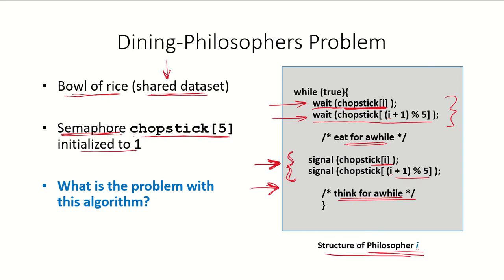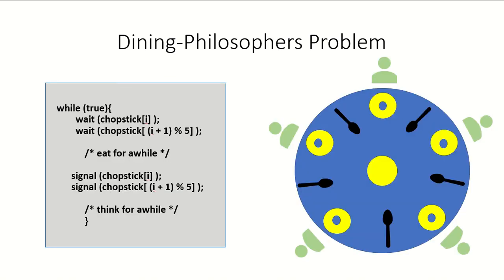What is the problem with this algorithm? Each philosopher is waiting on semaphore i and waiting on semaphore i plus 1 modulus 5. Philosopher i is waiting on chopstick i — say i equals 0 — and needs both chopsticks to eat, picking them one at a time. First he will pick either c0 or c1 and then take the other one.